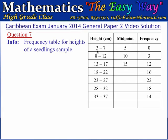The boundary values of a class are the values between which a seedling can be placed in that class. For example, in the first class the boundary values are 2.5 and 7.5 centimeters — a seedling measuring greater than or equal to 2.5 cm but less than 7.5 cm would be placed there. For the second class, the boundary values are 7.5 and 12.5 centimeters, so a seedling must measure between those values to be placed in this class.